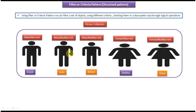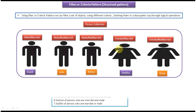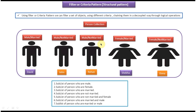Some of the persons are married and some are not. David is married, John is not married, Rowan is not married, Sheba is married, and Donna is not married. From this person collection, we want to get various sub-lists.